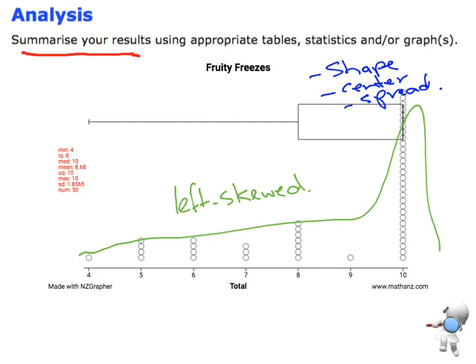Then for our centre, we want to look at where our mean and medians are, in particular where the mean is. For this particular example, our investigation question was about what's the mean number of ice blocks that they were going to buy. So there's our centre.